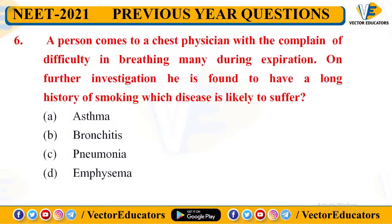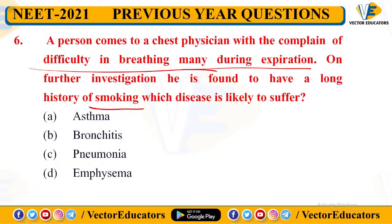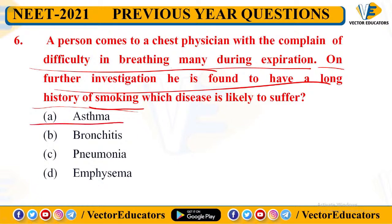Next question: a person comes to a chest physician with difficulty in breathing during expiration. On further investigation he is found to have a long history of smoking. Which disease is he likely to suffer from? The options are: asthma, bronchitis, pneumonia, and emphysema.